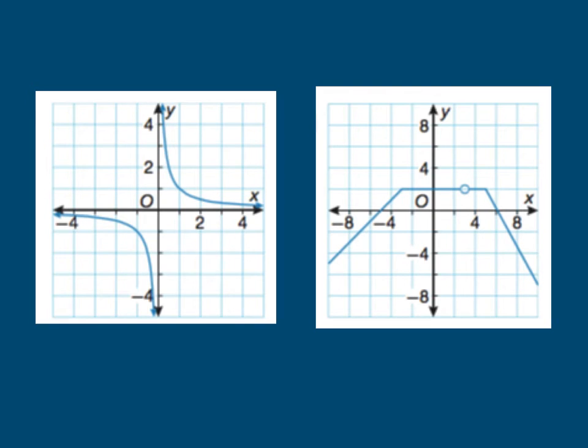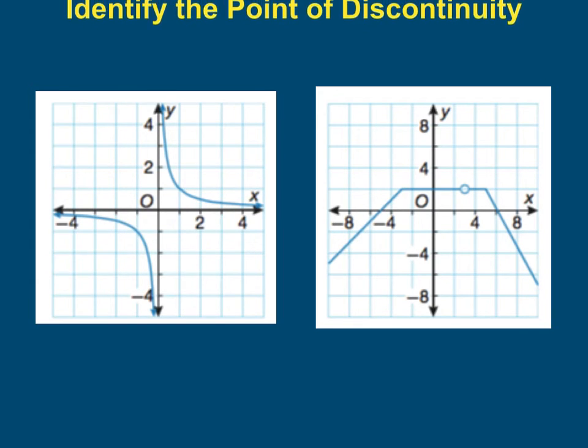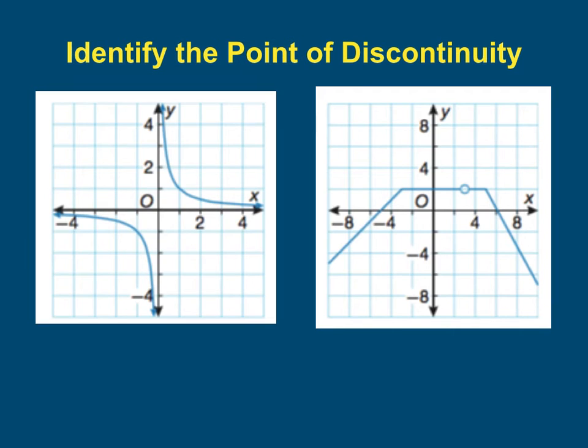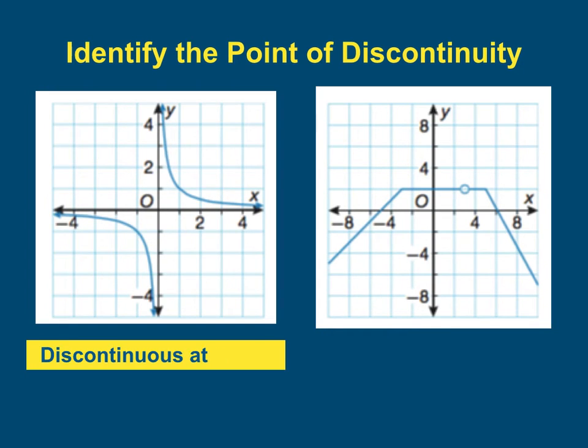Okay, so let's look at these graphs. These are both discontinuous graphs, and we're asked to identify the point of discontinuity. That means what x value results in a place where there's a gap, or an asymptote, or a jump. So the x value of 0 is where it's discontinuous in the first curve.